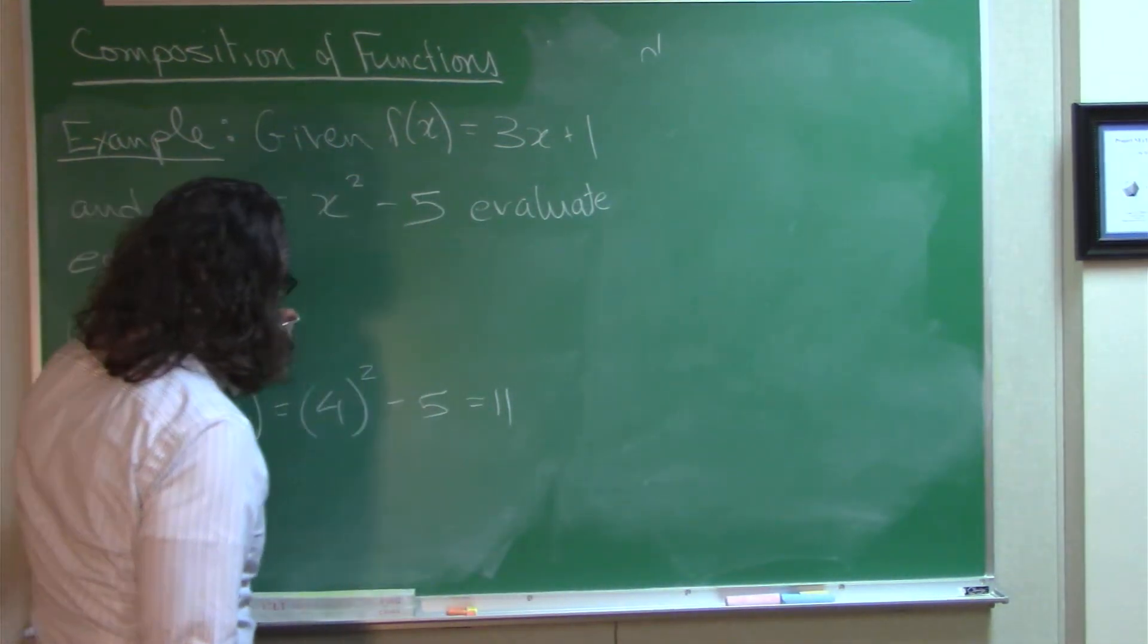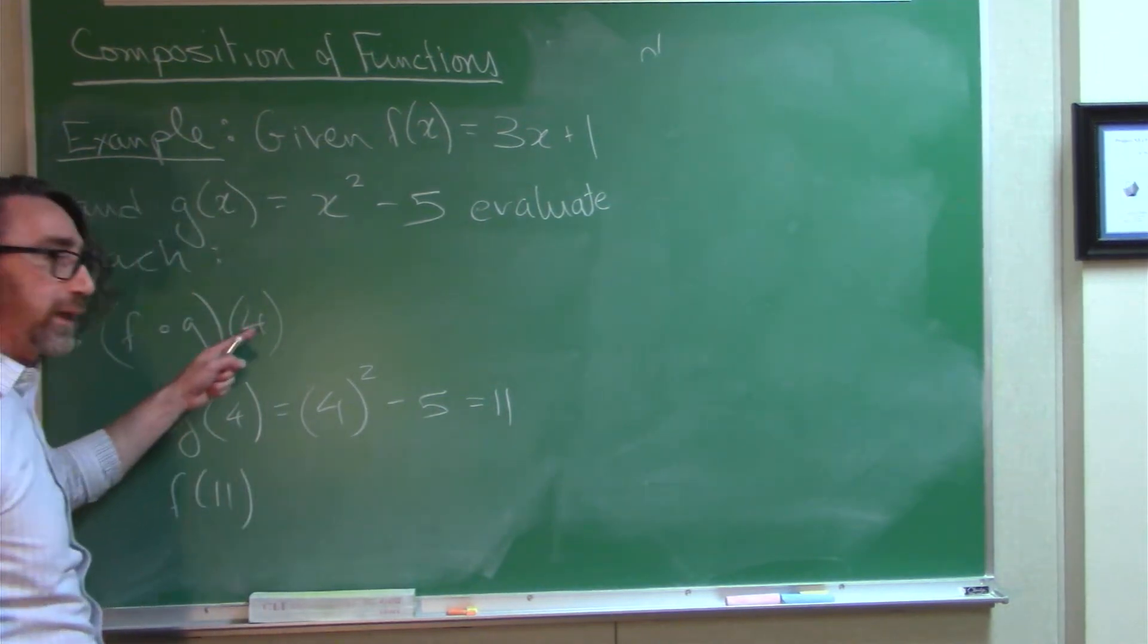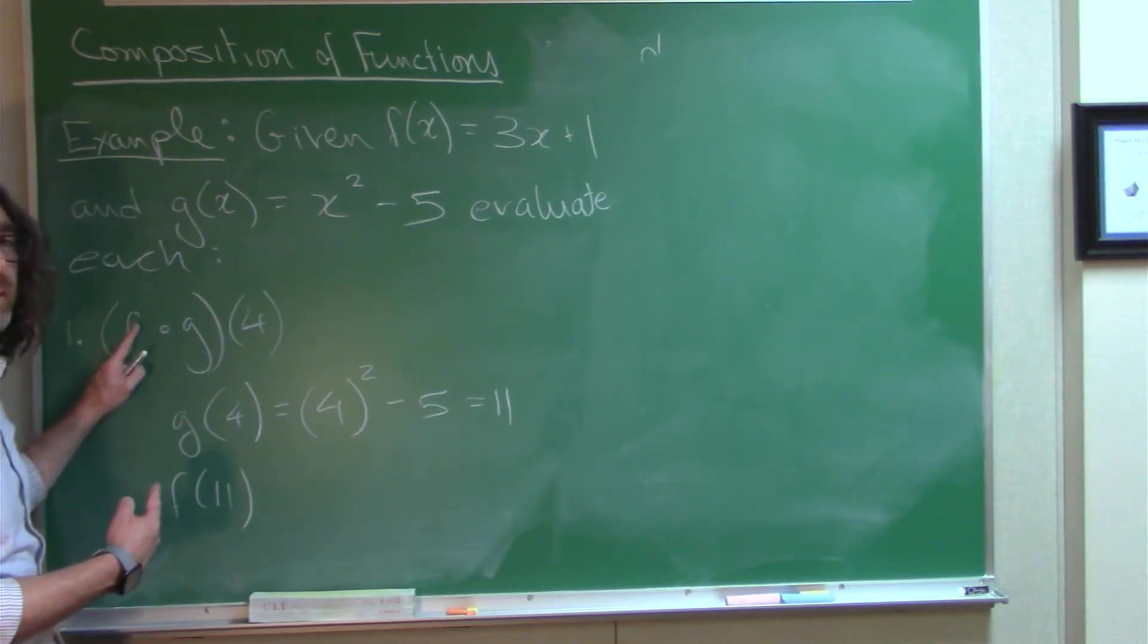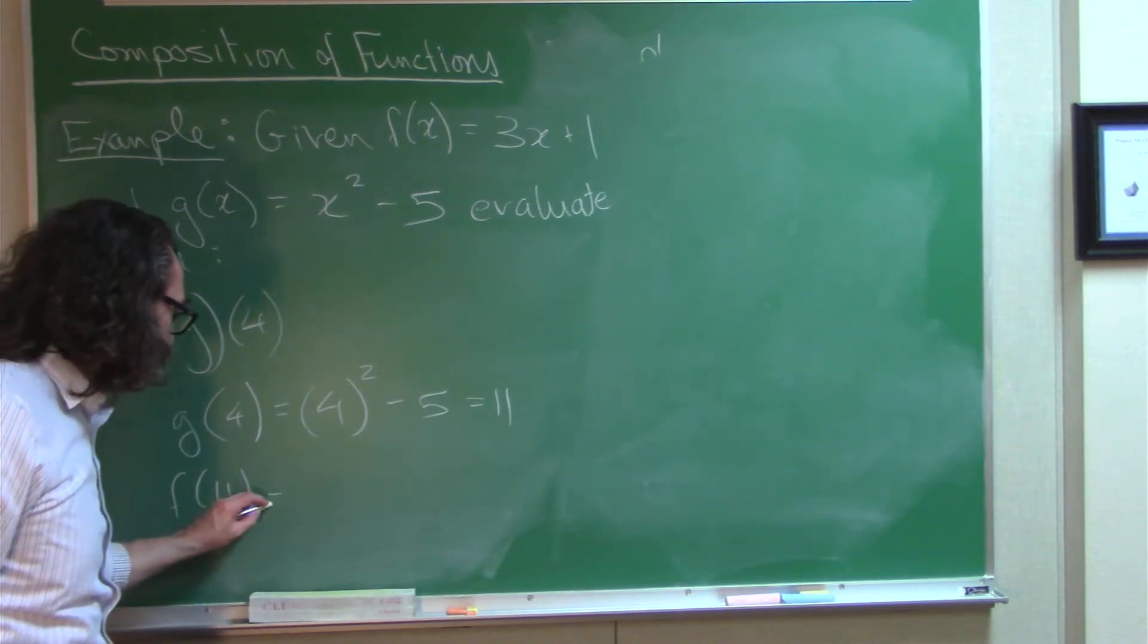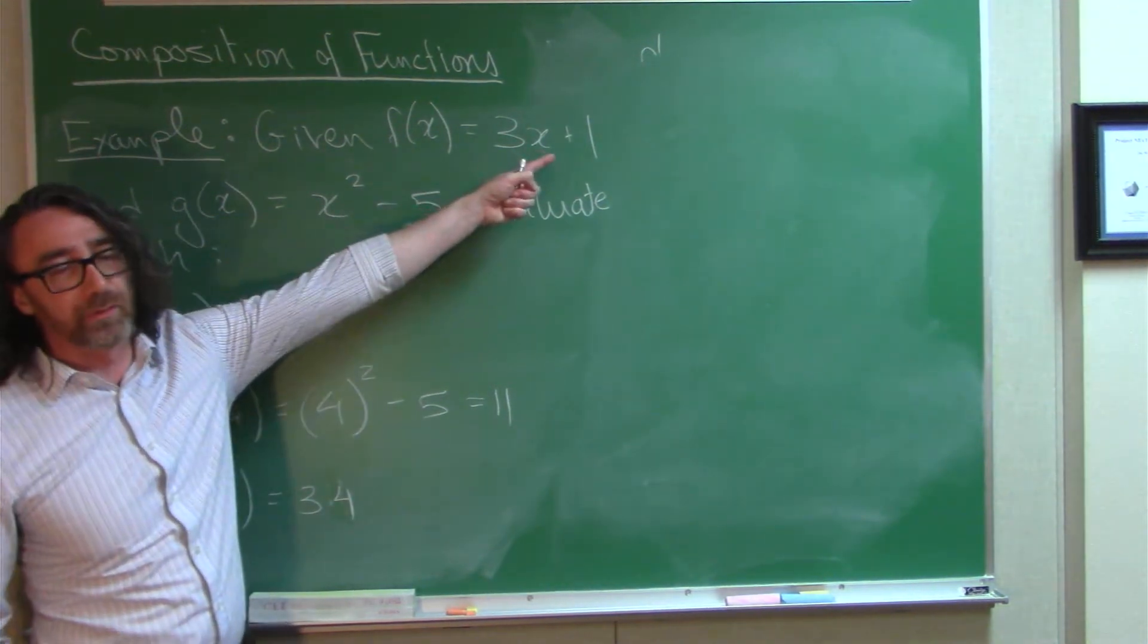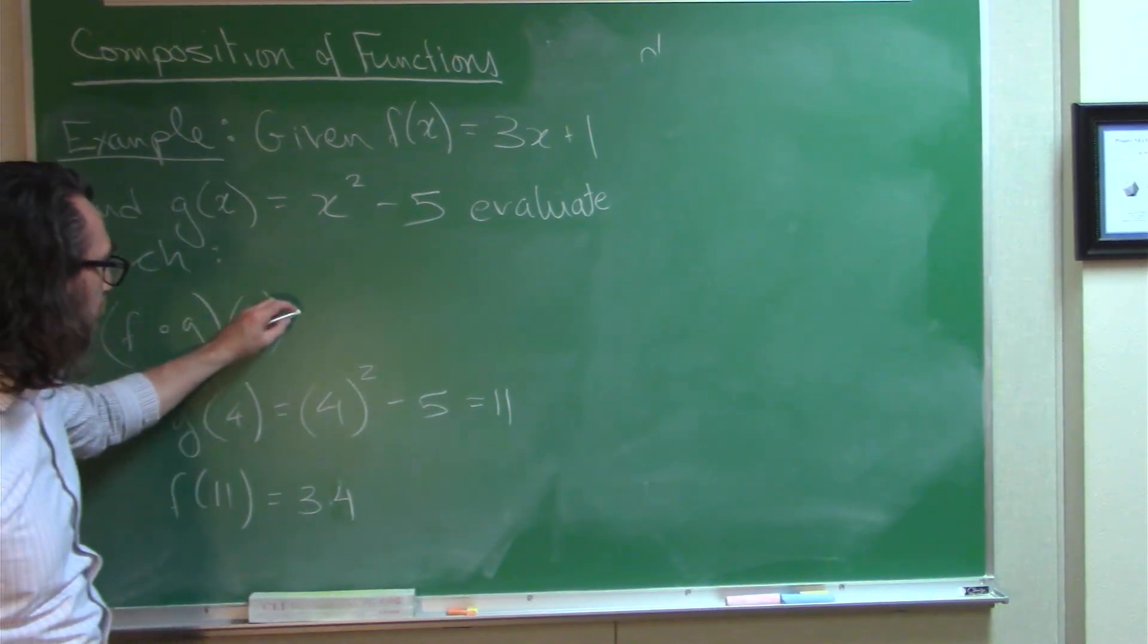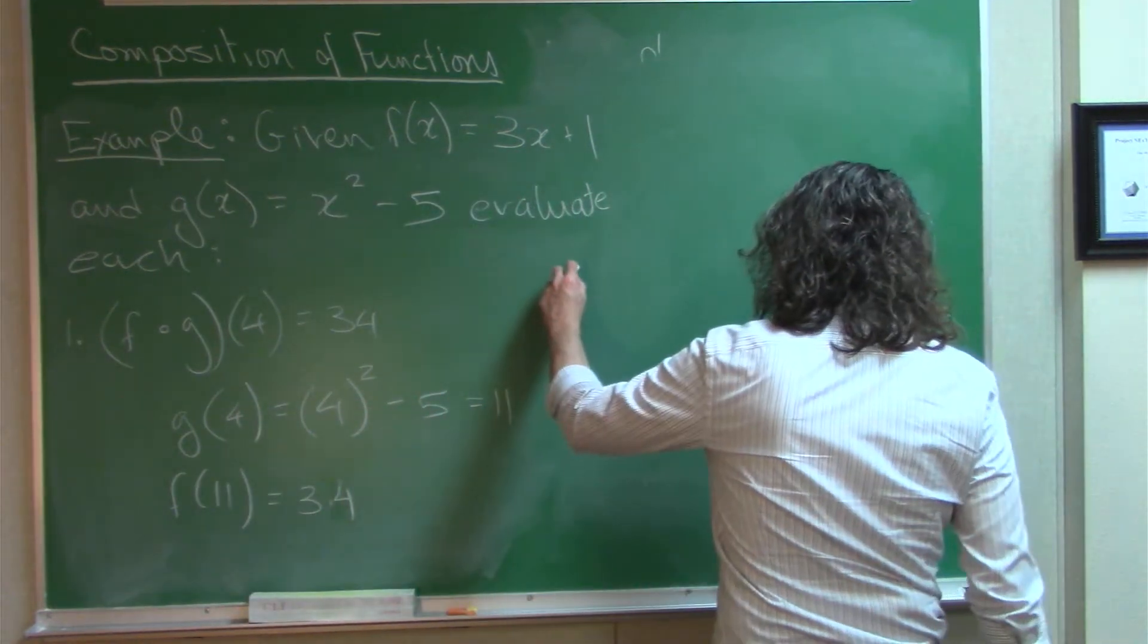And now, what I'm supposed to do is take that 11 and put it in F. Okay, so the 4 goes here into G, and then the output from that operation goes into F. F of 11. Okay, and that gives us 34, because 3 times 11 is 33 plus the 1 is 34. So, that is our output value there from that composition.